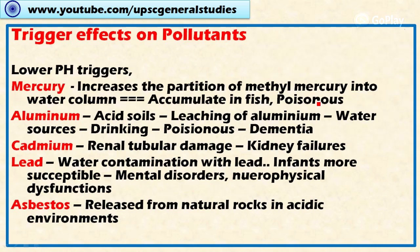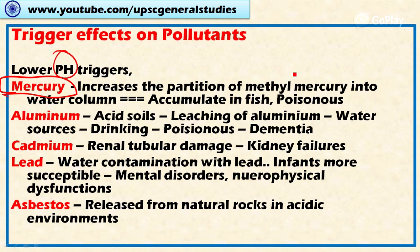Acid rain can trigger the release of various pollutants. The lower pH caused by acid rain releases mercury locked in soils, increasing the partitioning of methyl mercury into the water column. This methyl mercury is then accumulated in fish, which may lead to mercury poisoning — called Minamata disease — which occurred on the coast of Japan.